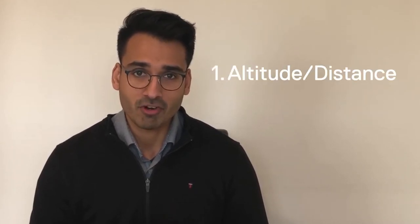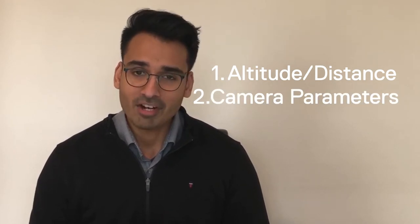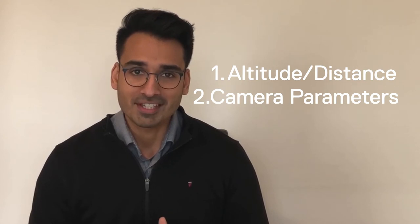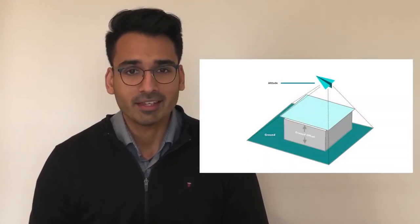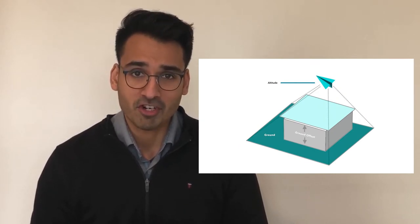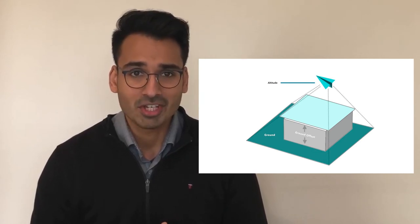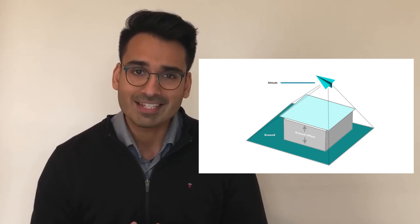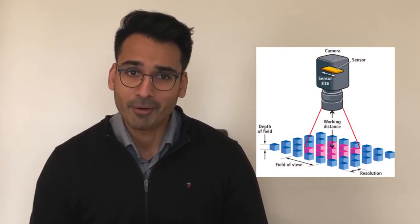GSD primarily depends on two main inputs. Number one: the altitude or distance to the structure. Number two: the camera parameters. Altitude or distance to the structure is the first parameter. Intuitively, the larger your distance to the ground or the structure, the higher is the amount of ground covered by a given camera's lens, so you'd expect the GSD to increase at higher altitudes or greater distances. The second parameter is the camera's parameters itself — this involves the sensor width, the focal length, and the image resolution. The higher the focal length of the drone, the lower will be the GSD.